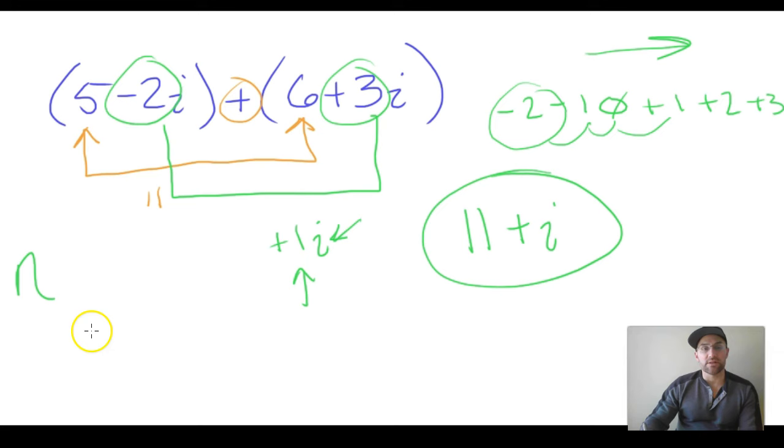In this case it was a positive one, so we had 1i, and that just means one times i, i one time. So we can omit the one because it's the multiplicative identity. We ended up with 11 plus i.